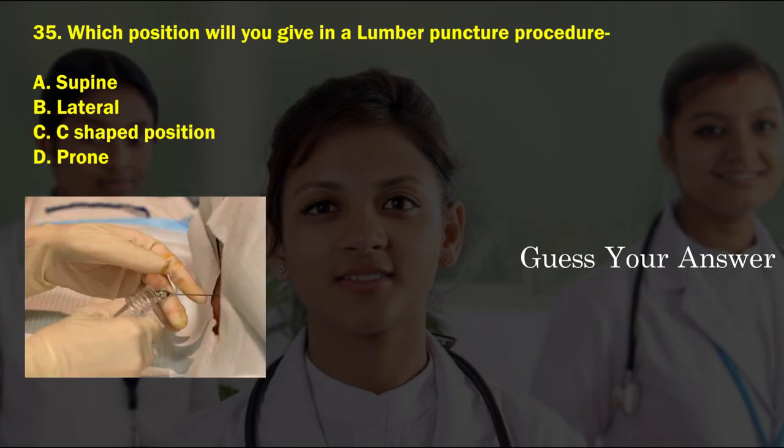Which position will you give in a lumbar puncture procedure? Option A: supine, option B: lateral, option C: C-shaped position, option D: prone. The correct answer is option B, lateral.